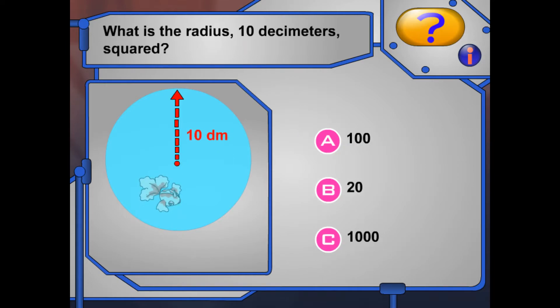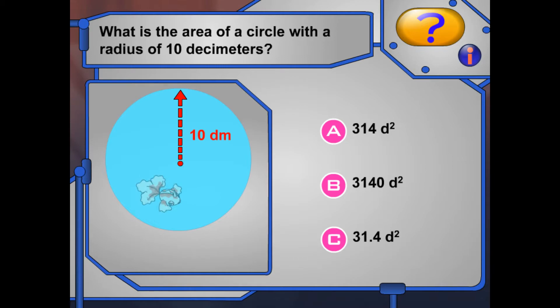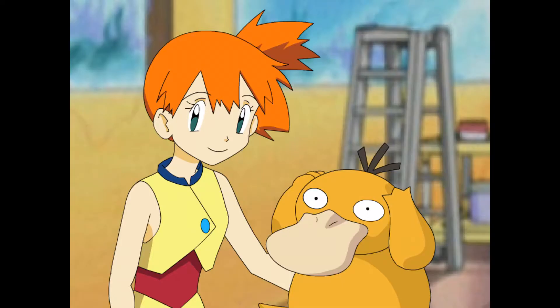What is the radius? 10 decimeters squared. Right! 10 multiplied by itself is 100. What is the area of a circle with a radius of 10 decimeters? Right! The radius squared is 100, and 100 pi is 314. You guys did great! Are you ready to try a bigger challenge? Let's go!